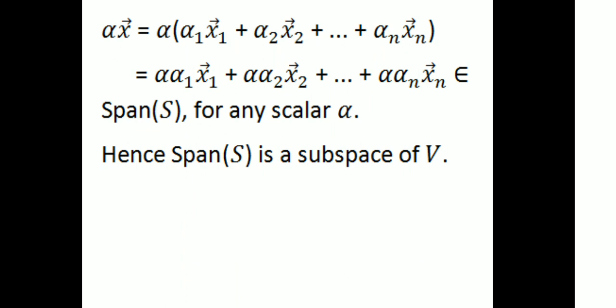So x and y are elements of span(S), and x + y is also an element of span(S). Also, for any scalar α, α·x = α(α₁x₁ + α₂x₂ + ... + αₙxₙ) = (α·α₁)x₁ + (α·α₂)x₂ + ... + (α·αₙ)xₙ, and each α·αᵢ is a scalar, so this is a linear combination, which belongs to span(S) for any scalar α. Therefore, the subspace conditions are satisfied and span(S) is a subspace of our vector space V.